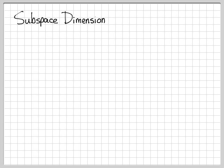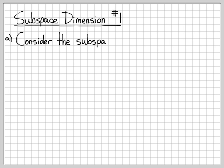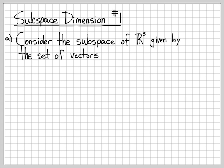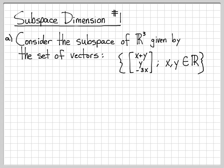In this problem, we're going to take a look at a couple of examples of what we mean by the dimension of a subspace. We've talked about subspaces in previous videos. A subspace is just a subset of a vector space that remains closed under scalar multiplication and vector addition. In part A, we're working with a subspace of R3 given by the set of vectors whose elements are x plus y, y, and minus 3x, where x and y are any real-valued numbers.